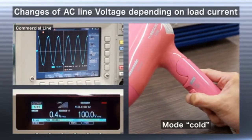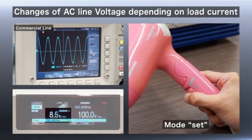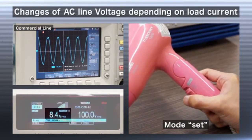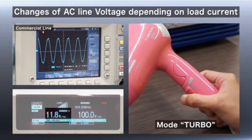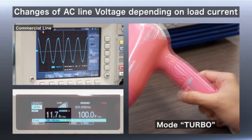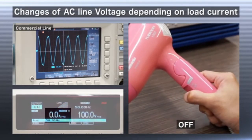The oscilloscope shows the voltage fluctuation of the hair dryer. When changing operation modes, the voltage decreases according to the current consumption. The hair dryer must function properly under any conditions.